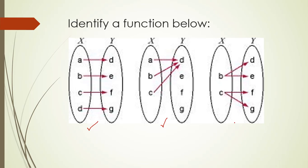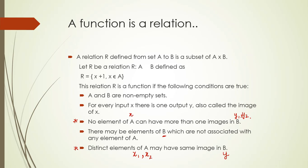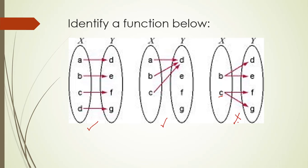Now if we look here, the element b has two images d and e. Similarly the element c in the set X has two images f and g in the set Y. If we look back to the properties that we have just discussed, no element of A can have more than one images in B. So this is not a function.